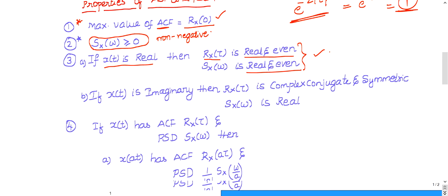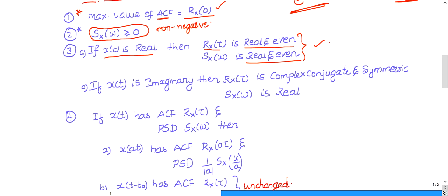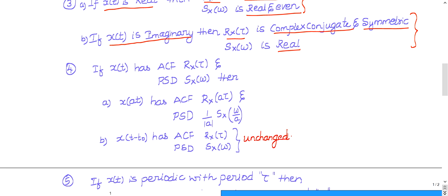If the given signal x(t) is imaginary, then the autocorrelation function will be complex conjugate symmetric, whereas the power spectral density will still be real. GATE problems are based on these properties, and further detailed explanations will be available in the upcoming signals and systems complete video lecture series.